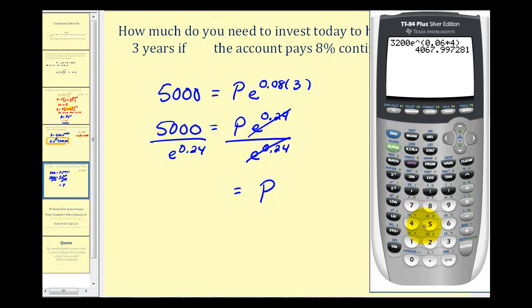So we'll go back to the calculator: 5,000 divided by e raised to the power of 0.24. So you would need to invest $3,933.14 today to have $5,000 in this account in three years.